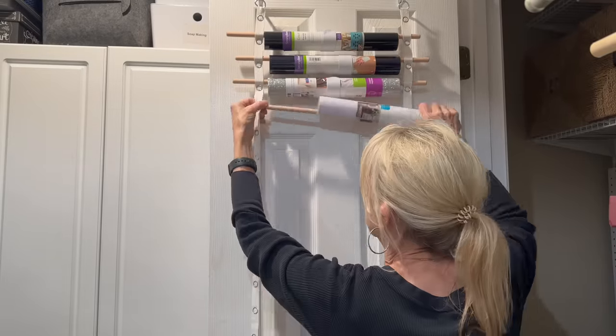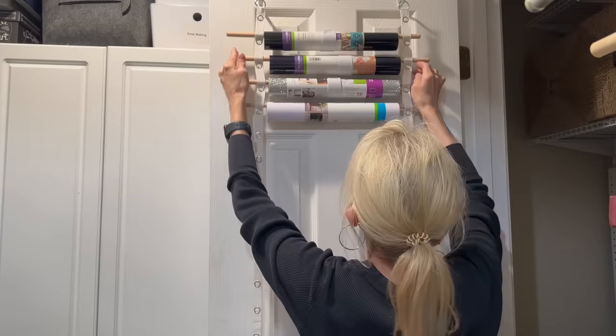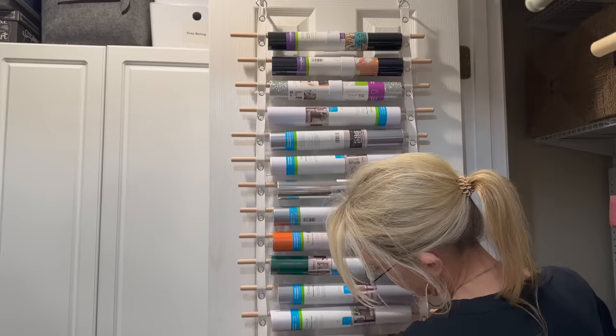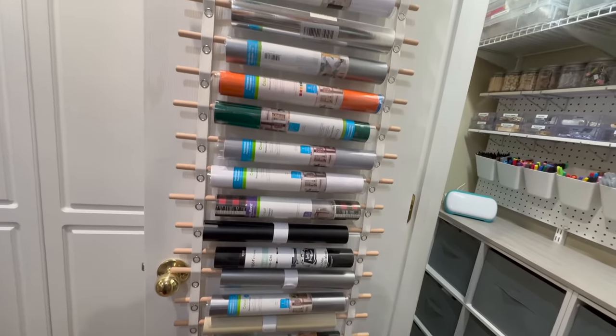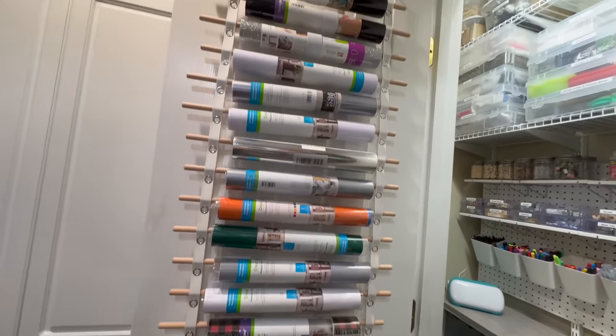If you have any tubes that haven't been opened you can just cut a hole in the bottom of the tube and hang the tube up with the vinyl inside of it. You see right there how much cleaner it makes your space. It really does organize it where you can see what you got.